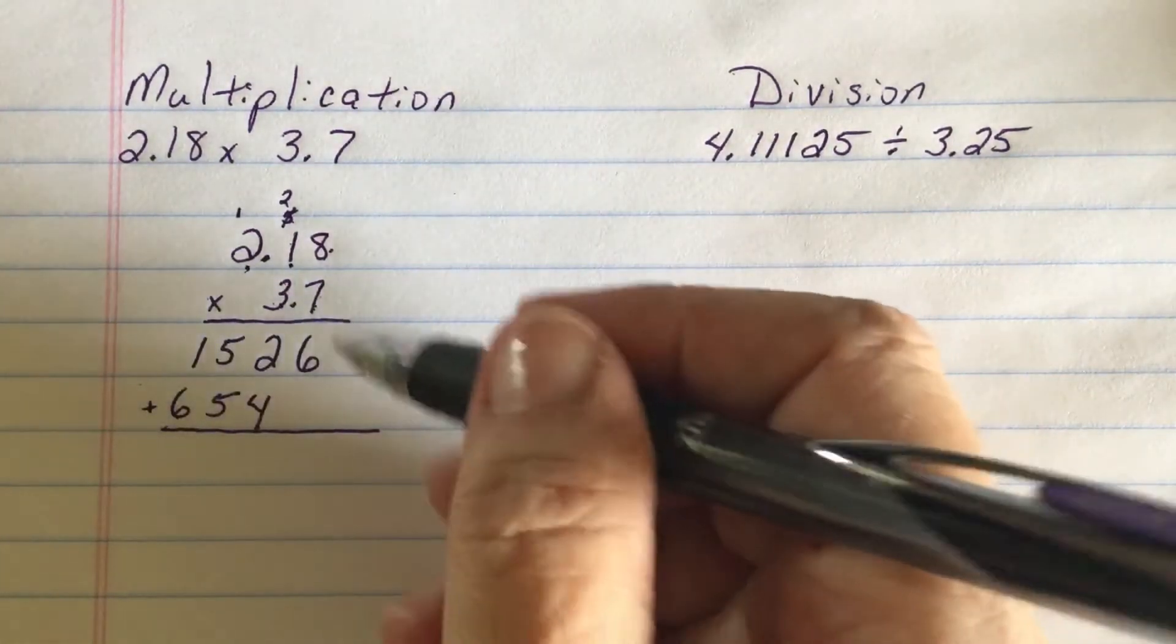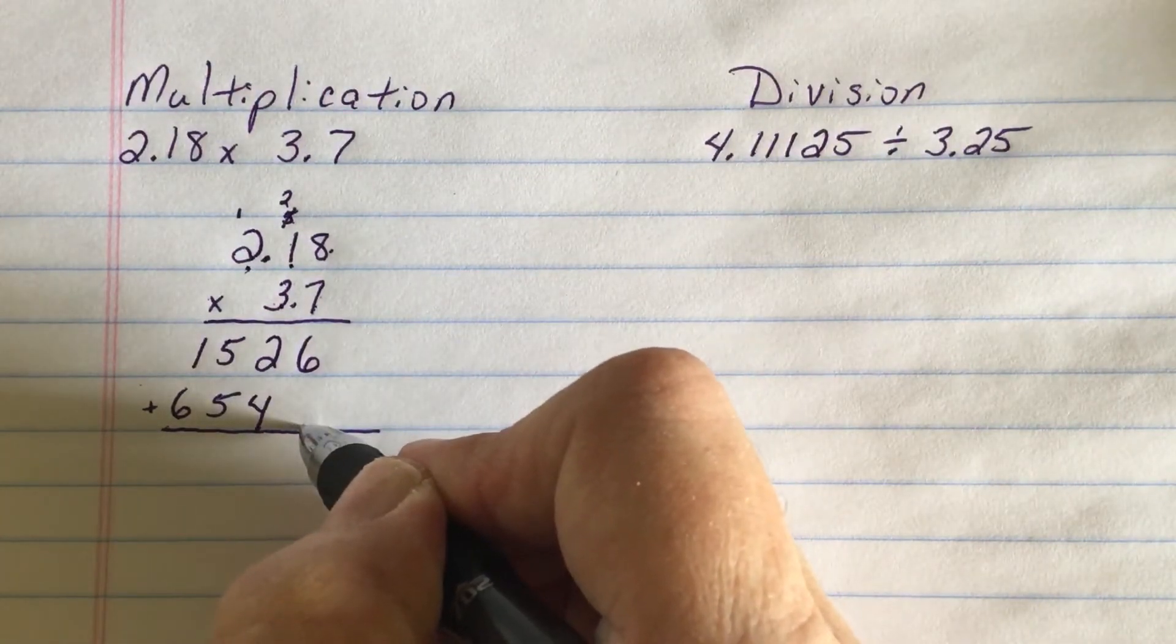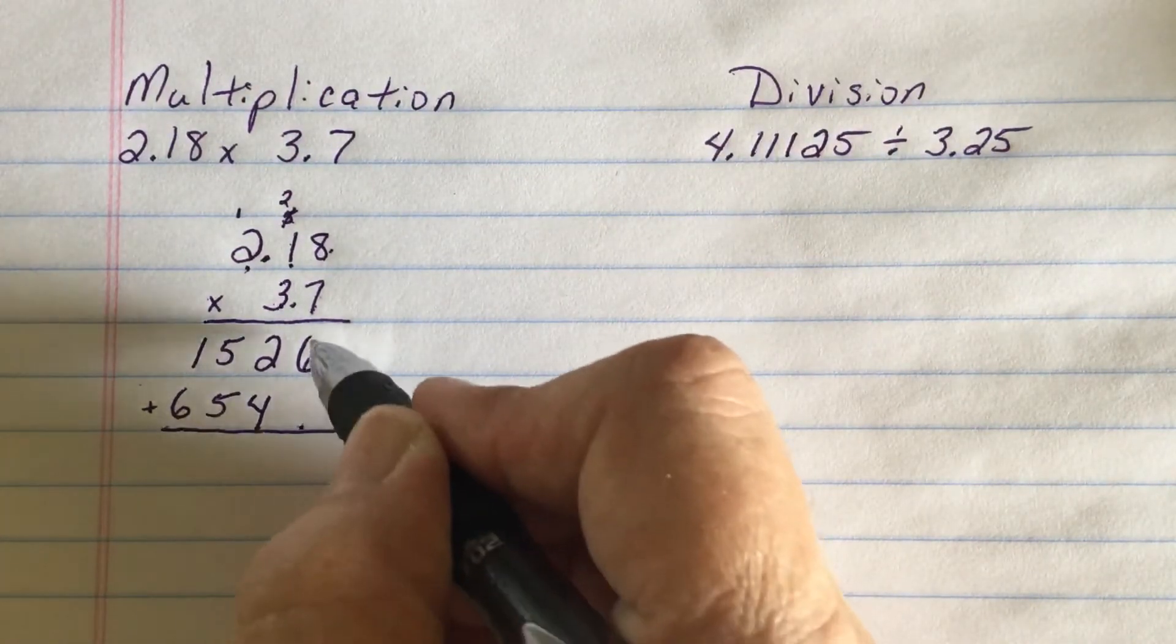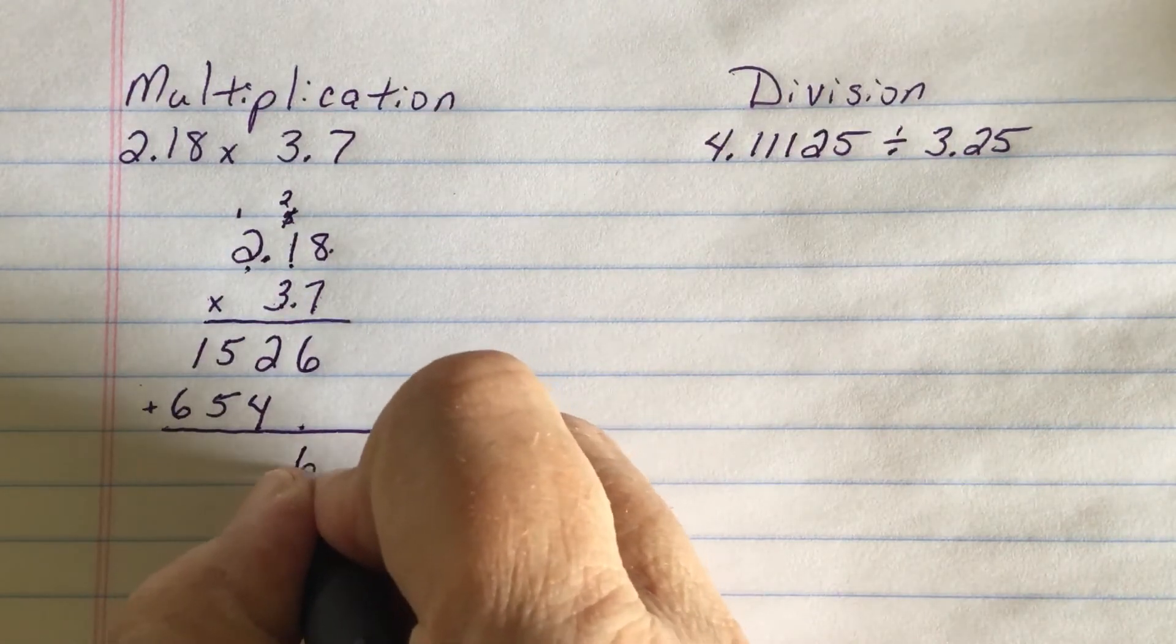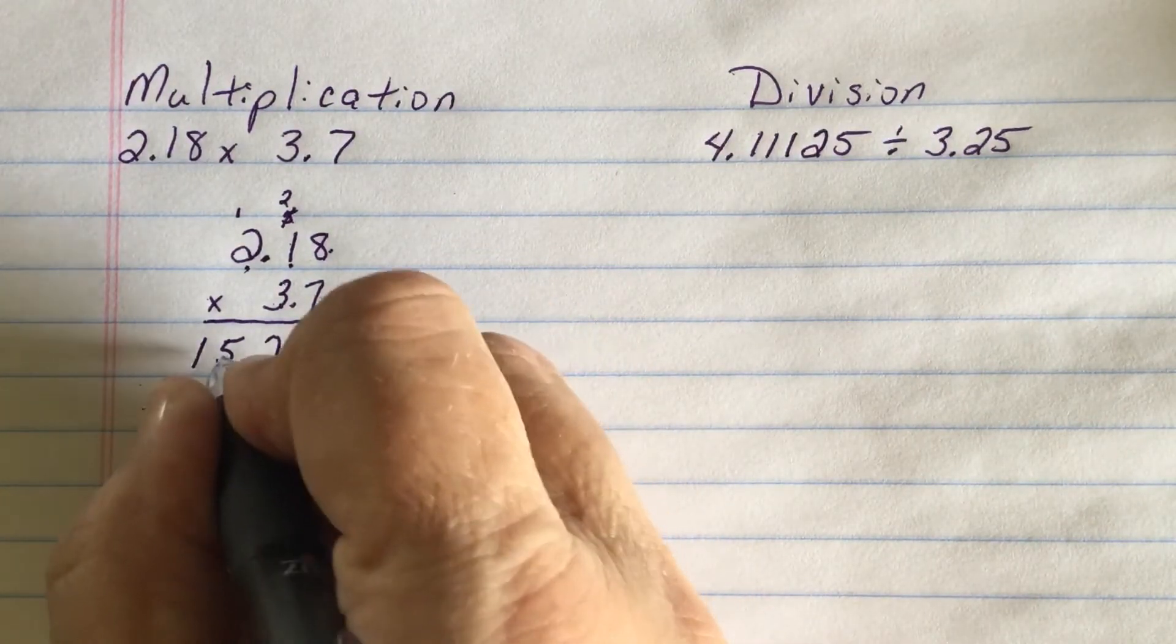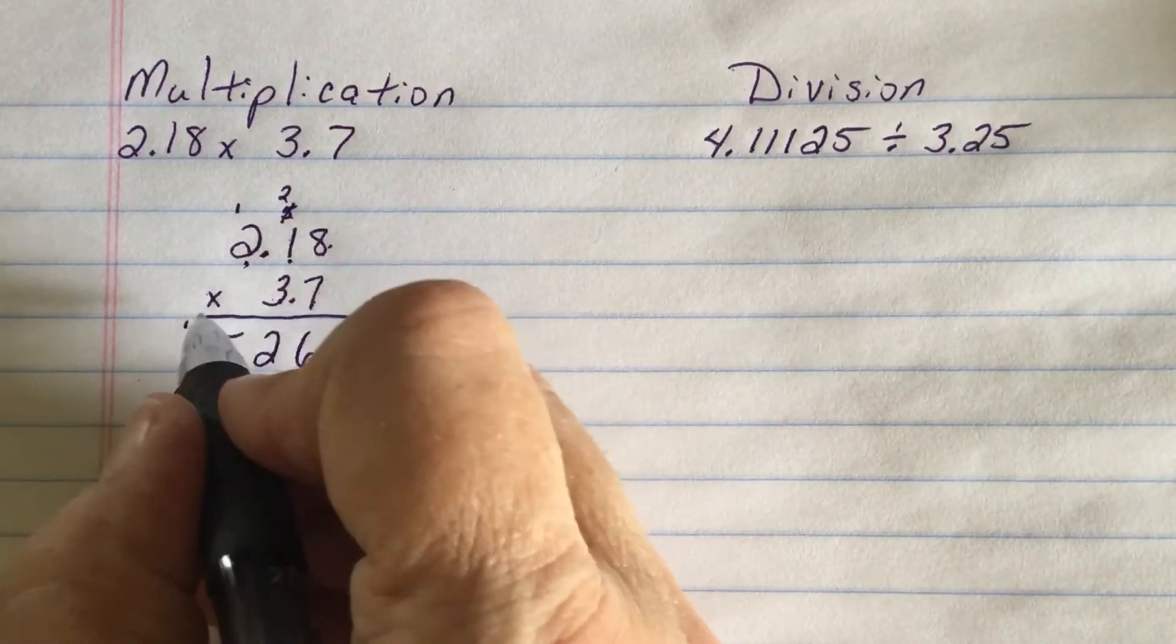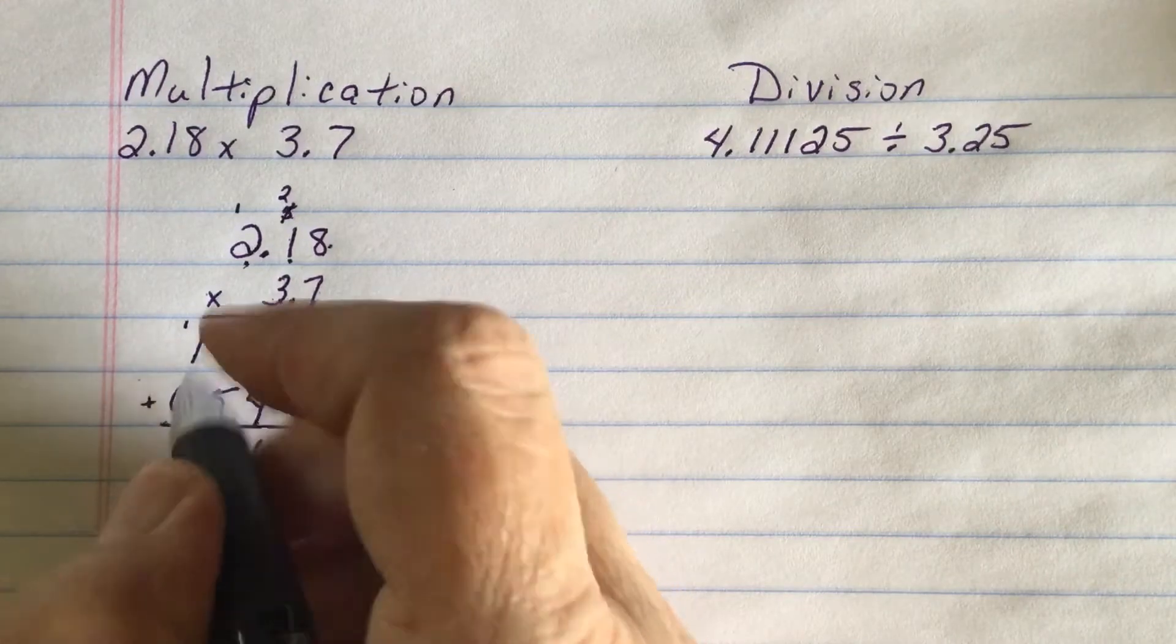I'm done multiplying so now I'm going to add down. Six plus zero, remember that's actually an empty spot so we place hold it, is six. Two plus four is six. Five plus five is ten, carry the one. One plus one is two plus six is eight.